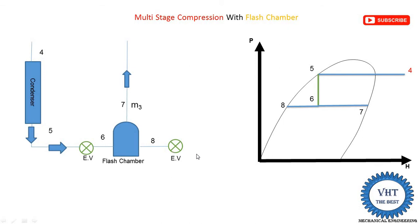Process eight to nine is the second expansion through the expansion device, where pressure is reduced from intermediate pressure down to the evaporator pressure. This is again an isenthalpic process, so enthalpy is constant and pressure is reduced. We draw the eight-to-nine line as vertical and downward on the p-H diagram.